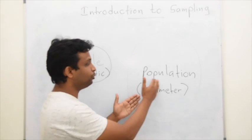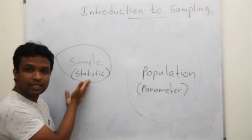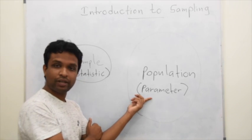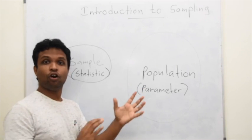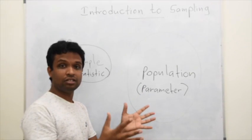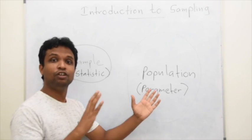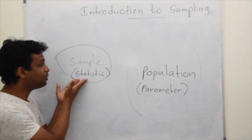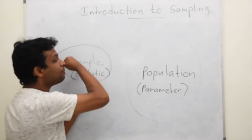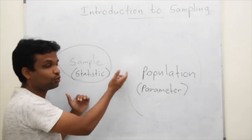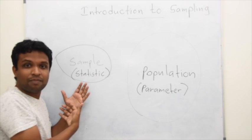Generally, in a population we have parameters, and in a sample we have statistics. A parameter — for example, the average height of a population — is a constant because it will not change. But sample statistics are not constants because we can take many samples from the population, so sample to sample there is variation. We call that sampling variation.